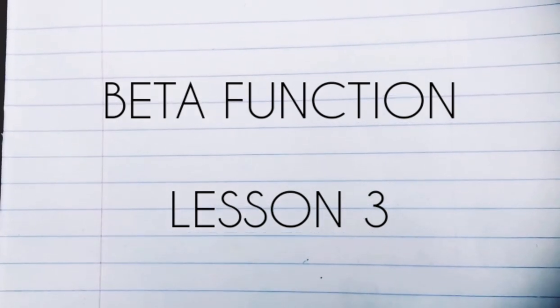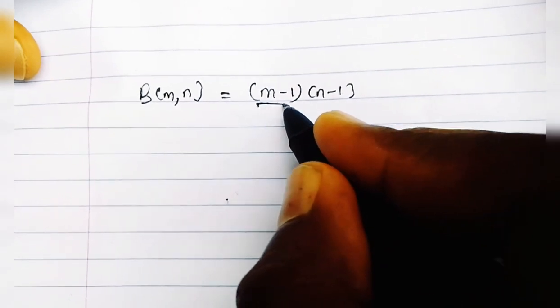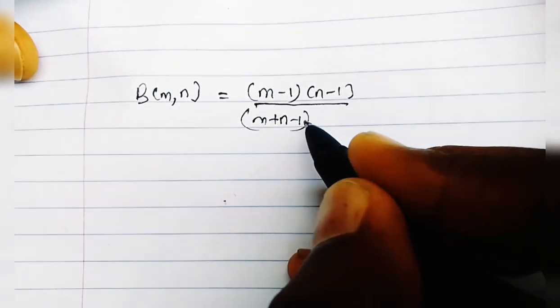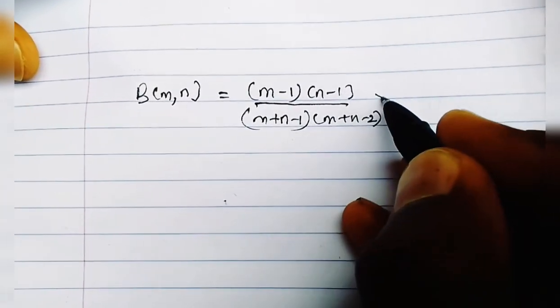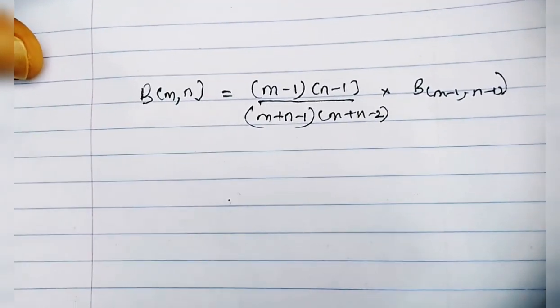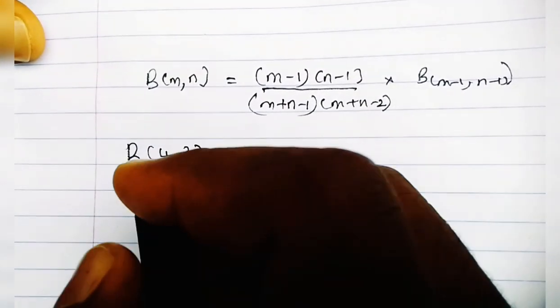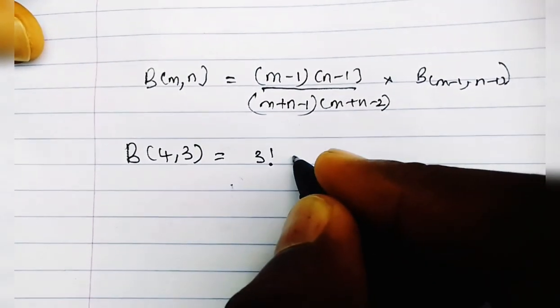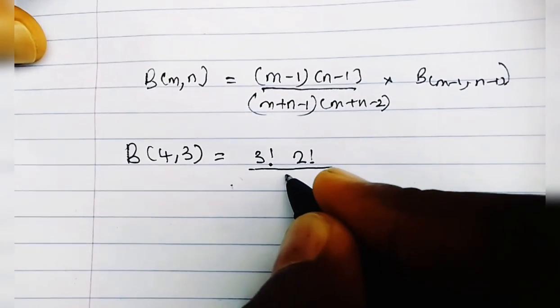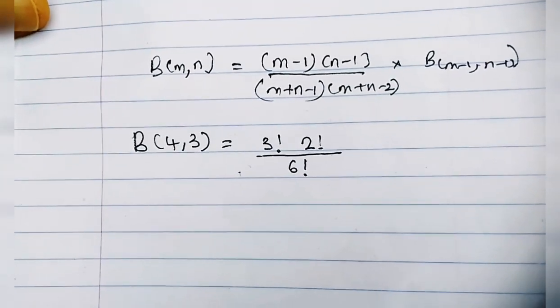...we had a proof that Beta(m, n) is equal to (m-1)(n-1) divided by (m+n-1)(m+n-2) times Beta(m-1, n-1). And we solved a question showing that Beta(4, 3) is equal to 3! times 2! divided by 6!. That was our answer from last time.